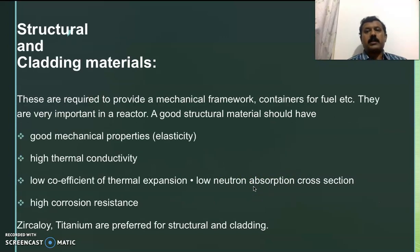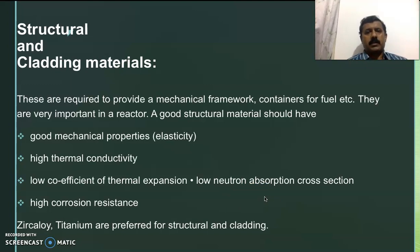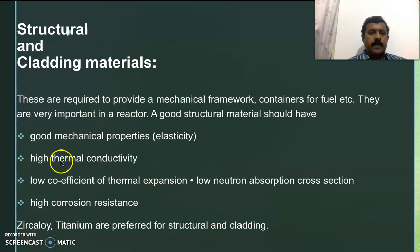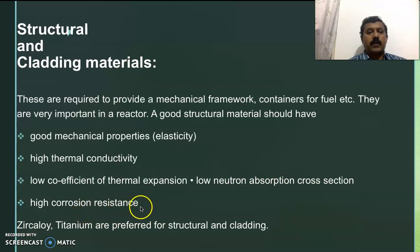The next important component is the structural and cladding materials. We require a mechanical framework for designing the reactor, including containers for the fuel, which is embedded in steel containers. The structural and cladding materials used in the reactor should have good mechanical properties, high thermal conductivity, low coefficient of thermal expansion, low neutron absorption cross-section, and high corrosion resistance since water and heavy water are used as coolants. Zircaloy and titanium are preferred for structural and cladding purposes.